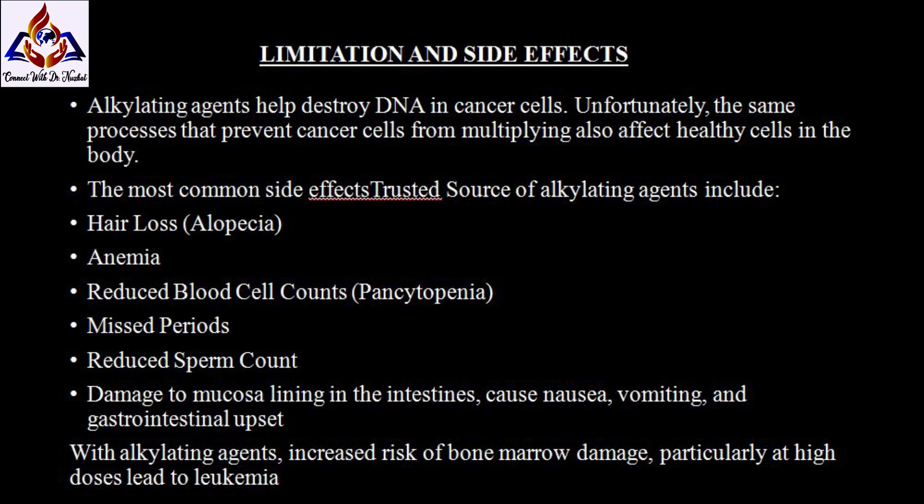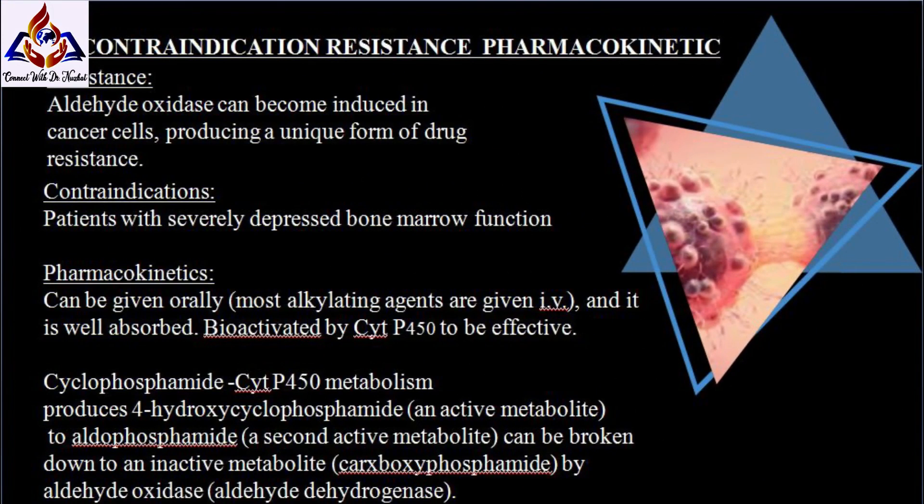Limitations and side effects: alkylating agents help destroy DNA in cancer cells, but the same processes that prevent cancer cells from multiplying also affect healthy cells in the body. The most common side effects include hair loss (alopecia), anemia, reduced blood cell counts (pancytopenia), missed periods, reduced sperm count, and damage to the mucosal lining in the intestine which may cause nausea, vomiting, and gastrointestinal upset. There is also an increased risk of bone marrow damage, particularly at high doses, which could lead to leukemia in some people.